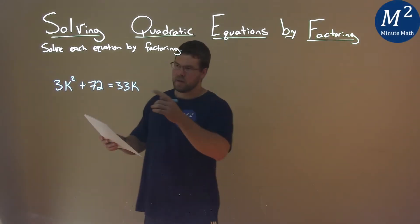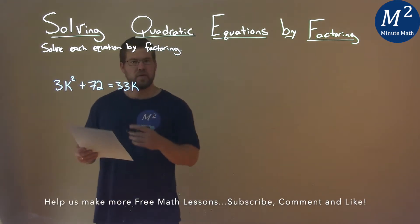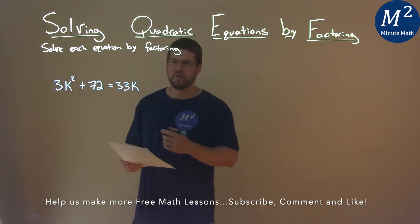We're given this problem right here: 3k squared plus 72 equals 33k, and we need to solve this by factoring.